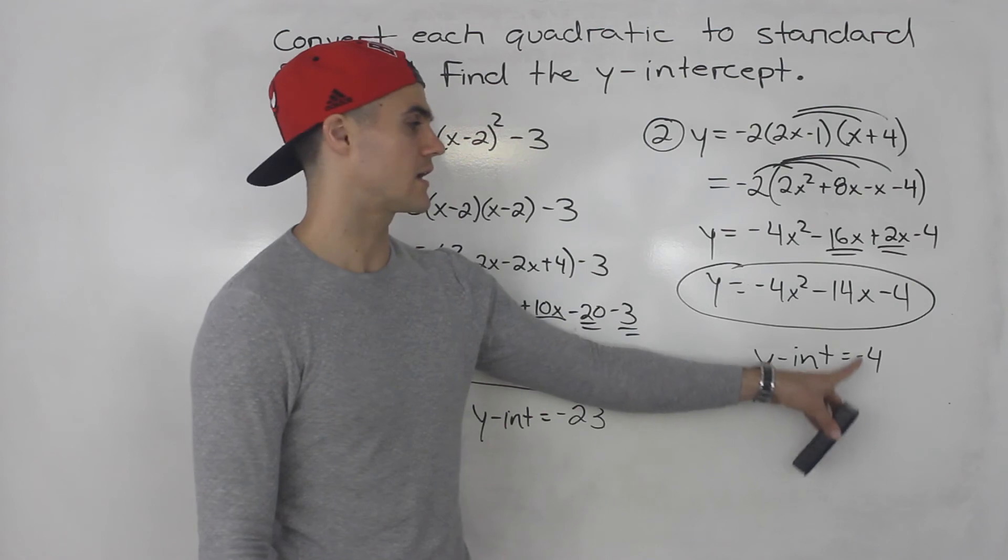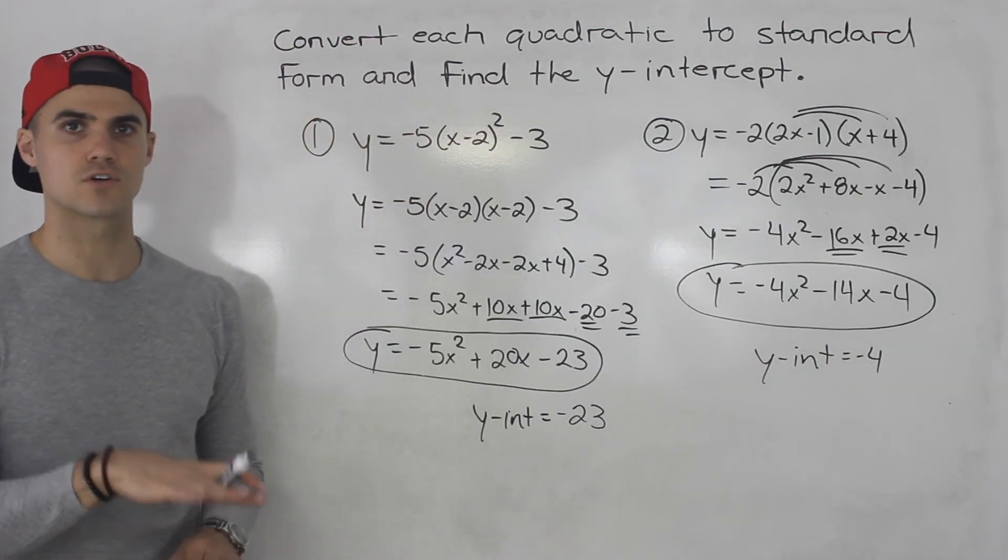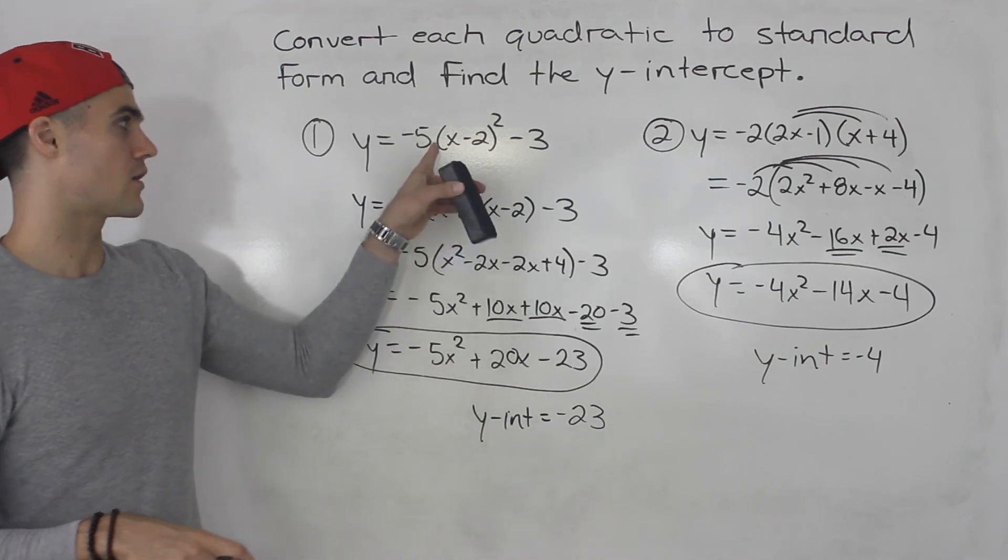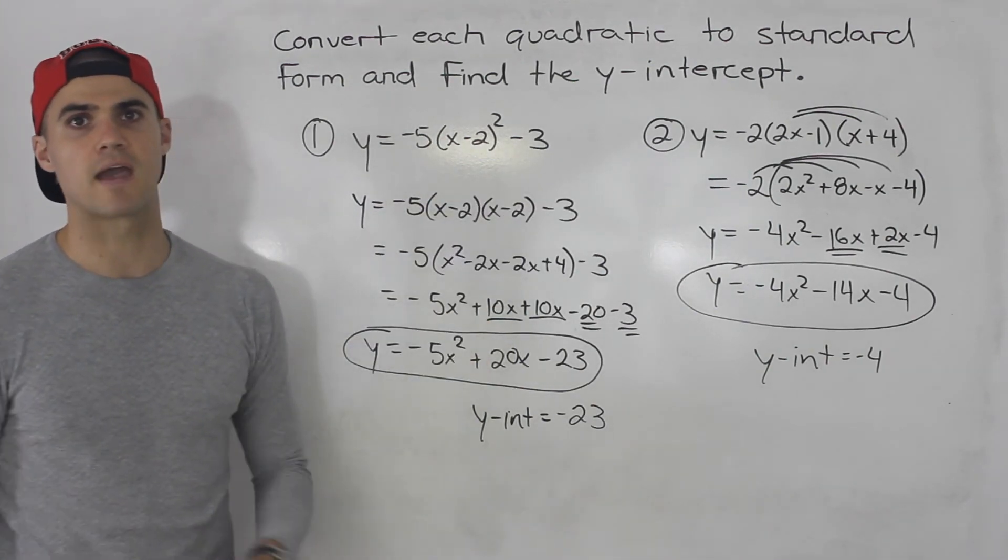So y-intercept for this one is negative 4, and that's the standard form quadratic. So whenever they ask you to convert to standard form, whether from vertex form or factored form, all you have to do is just expand and simplify.